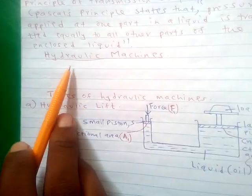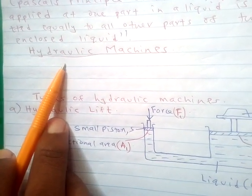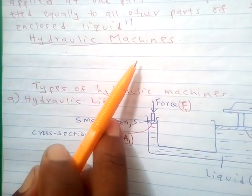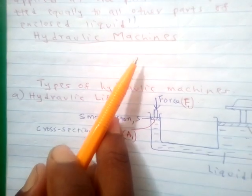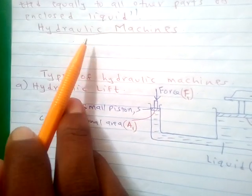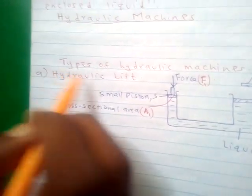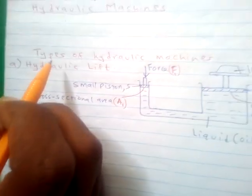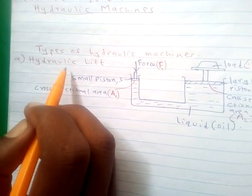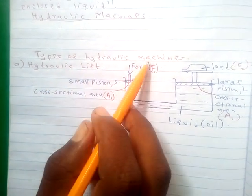Hydraulic machines apply Pascal's Principle, where a small force applied at one part of a liquid is used to provide a much larger force at the other part. We have various types of hydraulic machines: the hydraulic lift, the hydraulic press, and the hydraulic brake system.